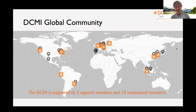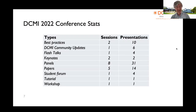DCMI is a very much global community, financially supported by three regional members and ten institutional members. We really need more members to join and support us. Briefly, we have two best practice sessions, ten presentations, a DCMI community update, six flash talks, four presentations, two keynotes, eight panels, 31 paper presentations across five sessions with 14 presentations, a student forum with four presentations, one tutorial, and one workshop.